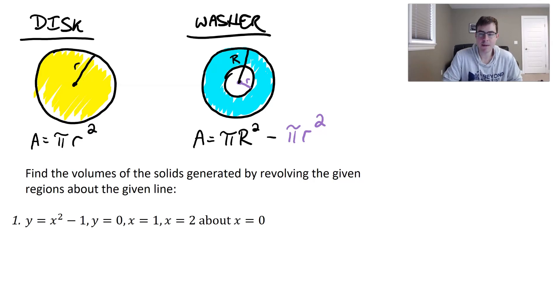All right, so we just did the disk method. Now let's take a look at a washer example. So let's take a look at number one here.